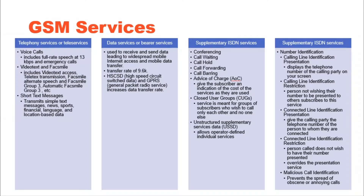Global System for Mobile is a second generation cellular system standard that was developed to solve the fragmentation problems of the first cellular systems in Europe. GSM is the world's first cellular system to specify digital modulation and network level architecture and services.